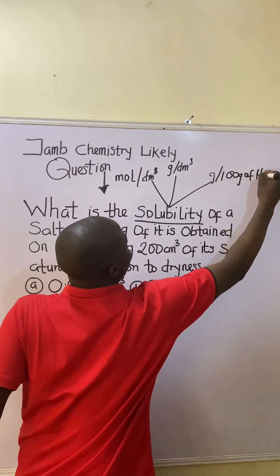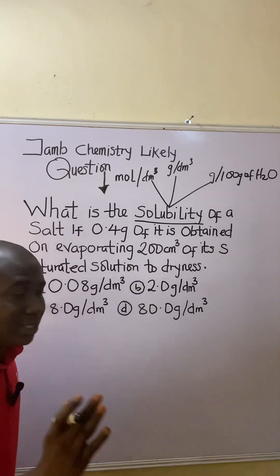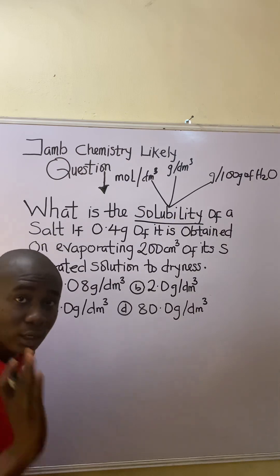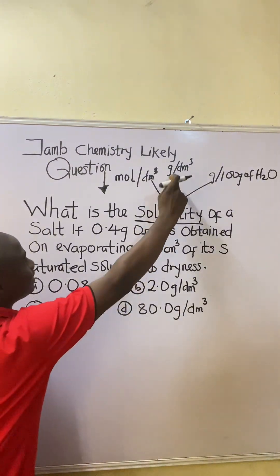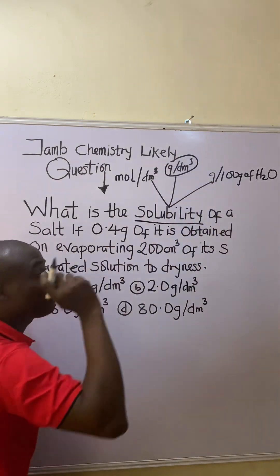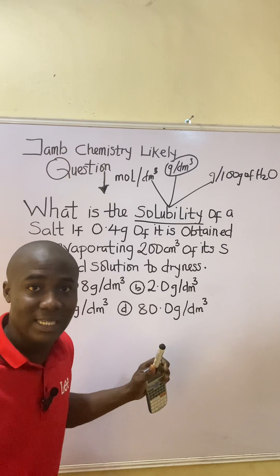Now how do I know the type of solubility I'm to look for? I will simply look at my options. And in the look of things, the unit to which the solubility was expressed is grams per dm³. So I have to remember the formula used for solving solubility in grams per dm³.